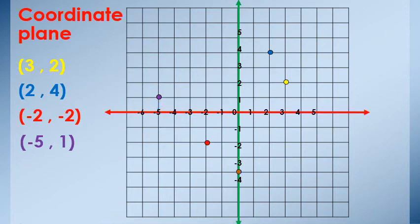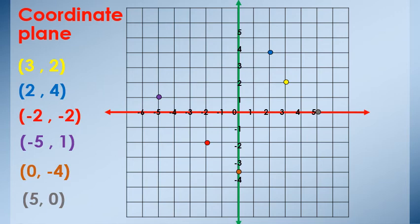Another point: this point is on axis Y. When it is on axis Y, axis X equals 0, and on axis Y at negative 4. Then the coordinate of this point is (0, negative 4). Another point is on axis X. When it is on axis X, Y equals 0, and on axis X at 5. Then the point is (5, 0).